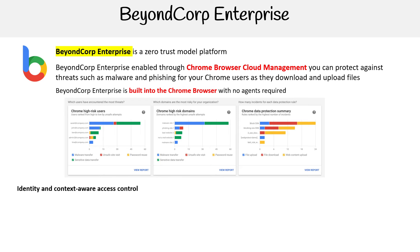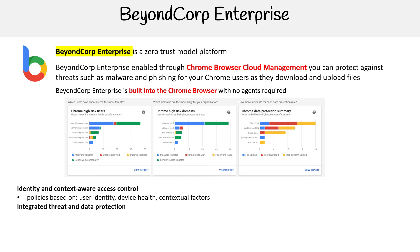BeyondCorp Enterprise does identity and context-aware access control policies based on user identity, device health, and contextual factors. It also provides integrated threat and data protection — preventing data loss, stopping common threats, and providing real-time alerts.